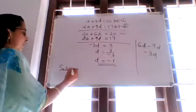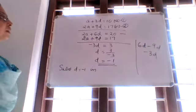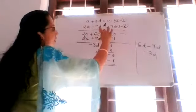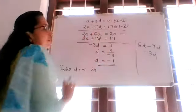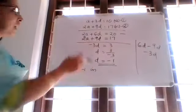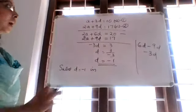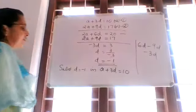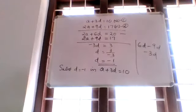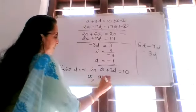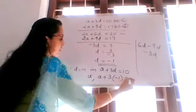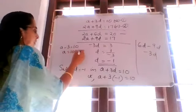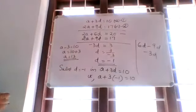Substitute D is equal to negative 1 in equation 1: A plus 3D is equal to 10. So A plus 3 into negative 1 equals 10. Therefore A minus 3 is equal to 10, so A is equal to 13.